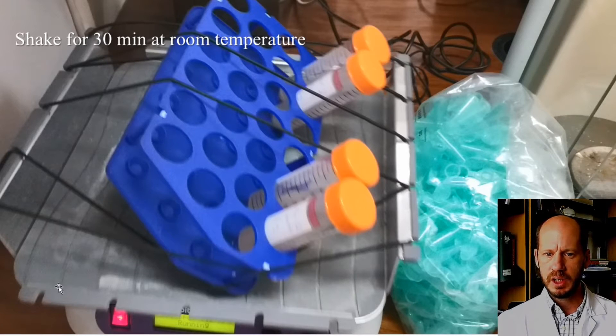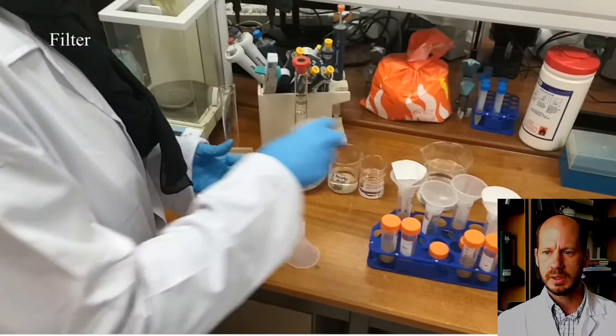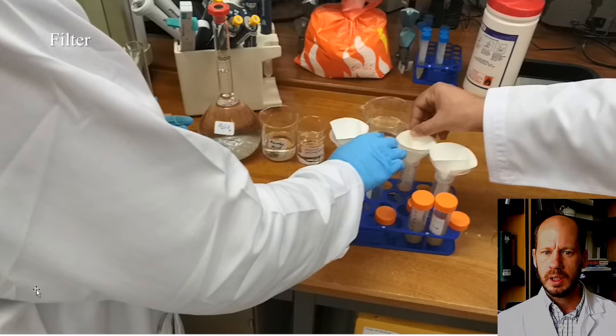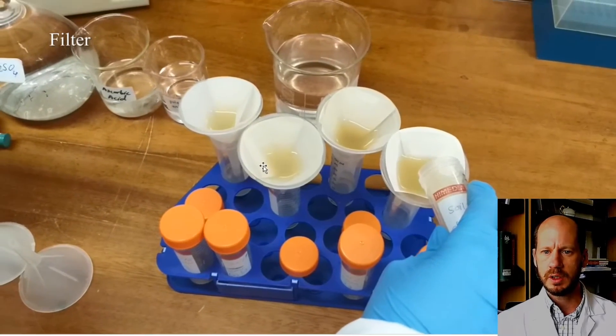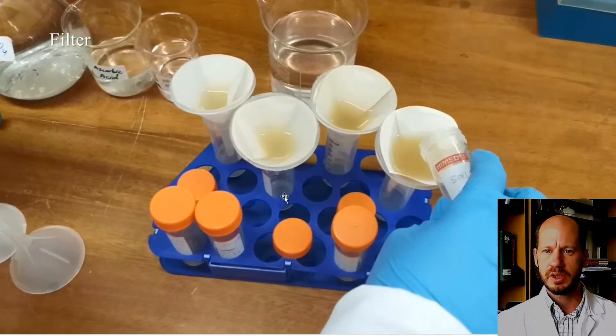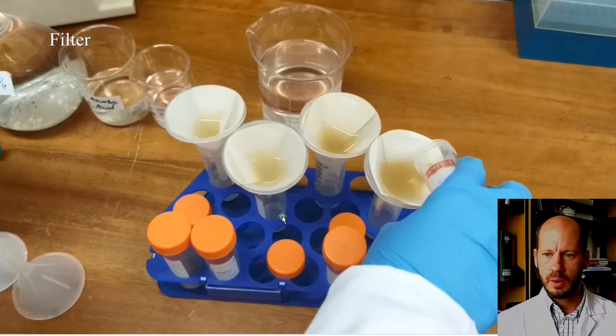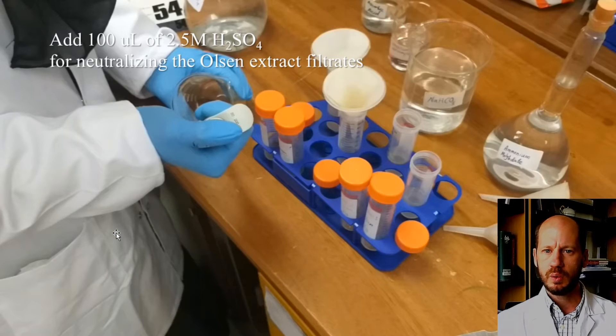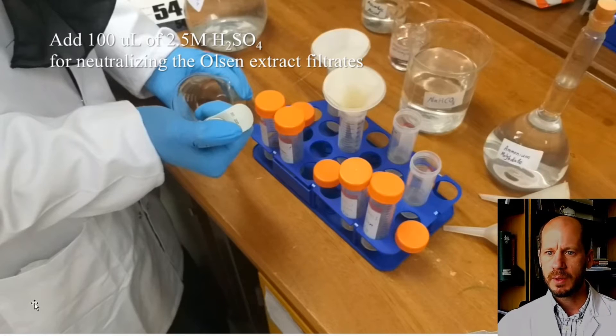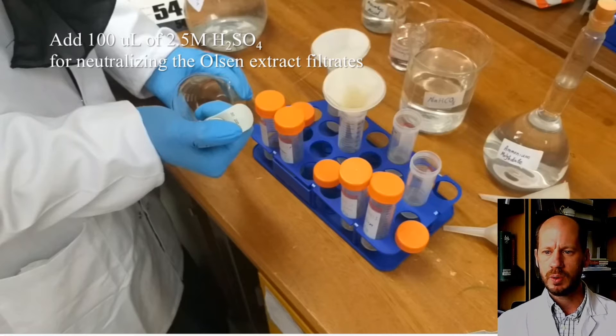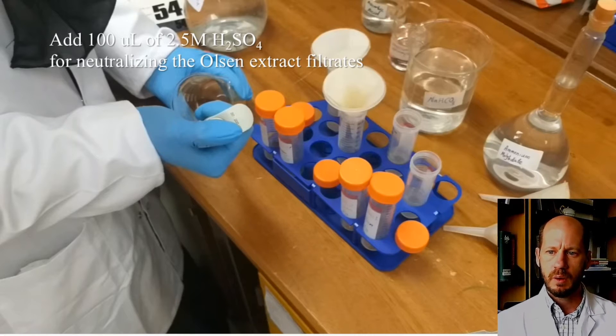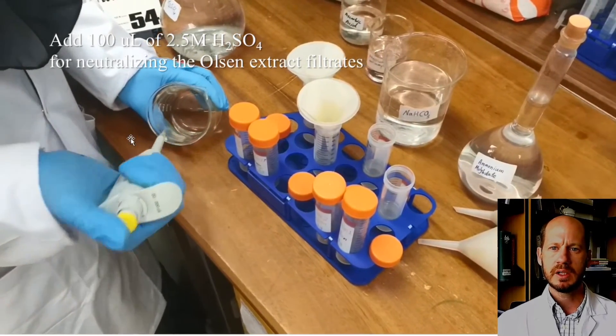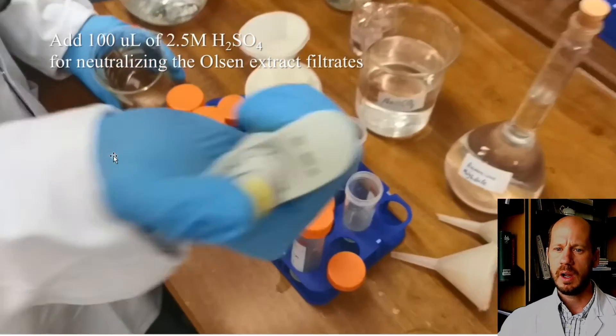After we finish shaking, we will need to filter. We shake the soil with an extractant or water, and then we filter and collect the filtrate. What goes through the filter is what we're going to measure. When we do the Olsen extract, we need to add a little bit of acid to the filtrate just to neutralize it and avoid interference with the color development using the molybdenum method. Here, we're adding 100 microliters of sulfuric acid to neutralize the Olsen extract from soil.